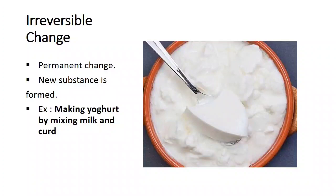For example, making yogurt by mixing milk and curd. Here we can see the yogurt, and it is made by mixing milk and curd. Now from this yogurt, are we going to get back milk again? No. Milk was the initial substance before the change, but after the change, a new substance — yogurt — is formed. So irreversible change is a permanent change and there is formation of new substance.